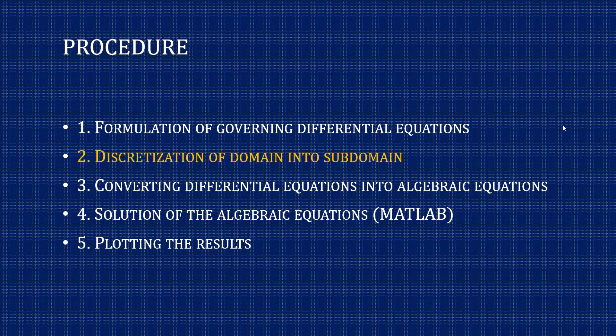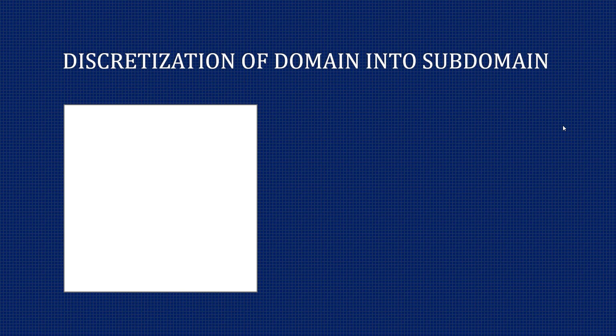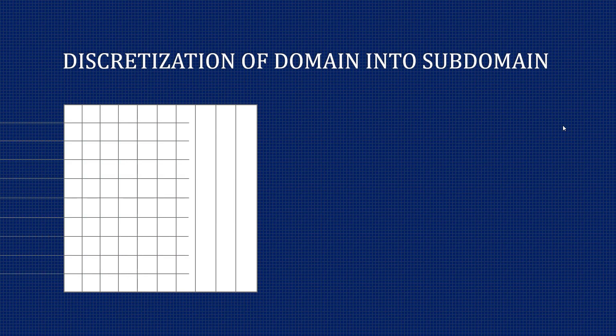Let us first talk about the discretization of domain into subdomain. In the previous video we saw that our domain is a 2D domain — a simple rectangle or square. In order to divide the entire domain into subdomain, that is into small parts, we divide the domain vertically and horizontally by drawing vertical and horizontal lines. You can see that the entire domain is divided into small squares, and each small square is called a subdomain. In our case all the small elements are of the same size.